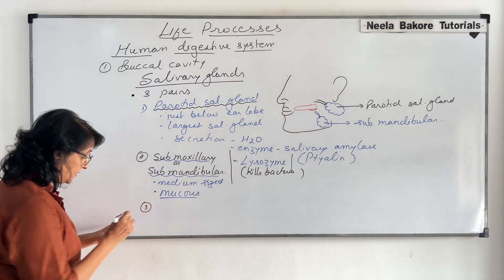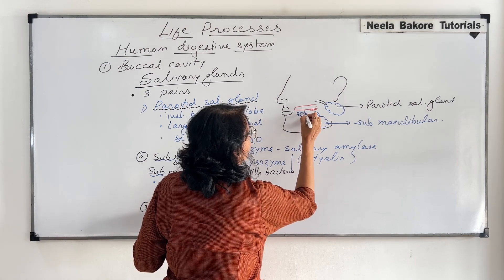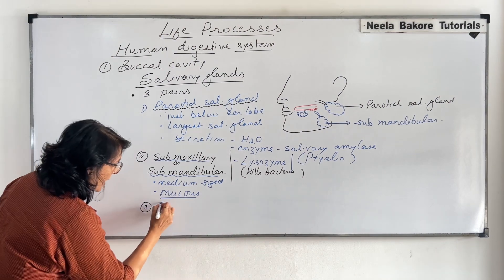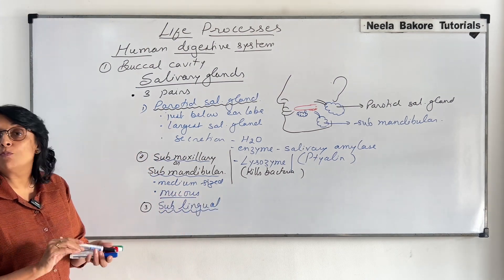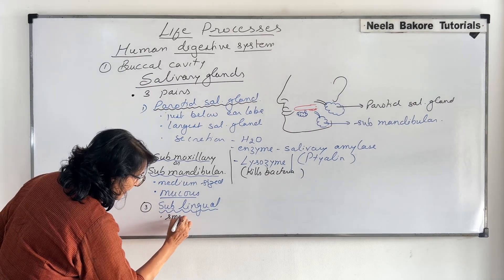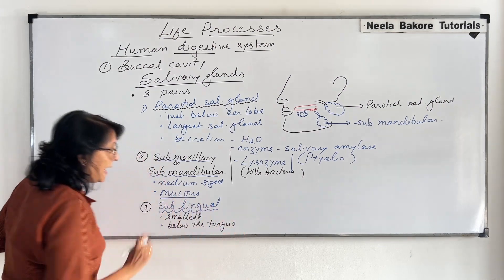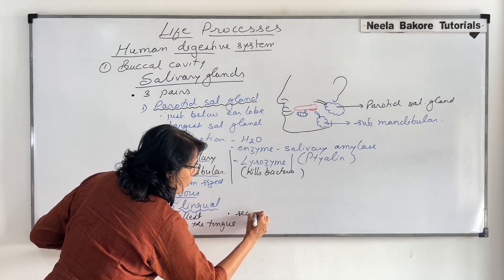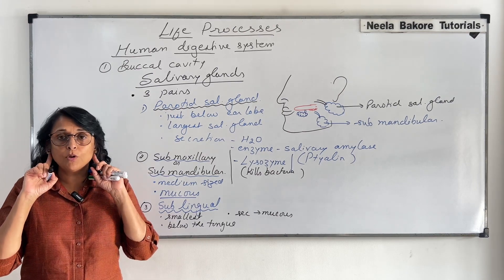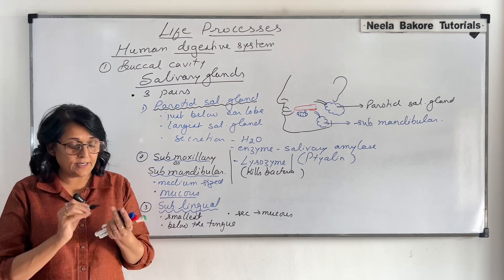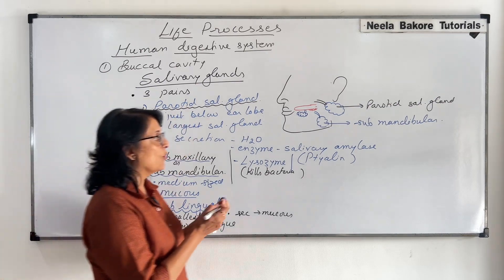The third salivary gland is just beneath the tongue — it is here and it is the smallest. It pours its secretion just beneath the tongue and is known as the sublingual gland. It is the smallest of the three salivary glands, located below the tongue, and its secretion is also mucus. In all, there are three pairs: two below the earlobes, two at the jaw angle, and two below the tongue. The combined secretion of all three is known as saliva.